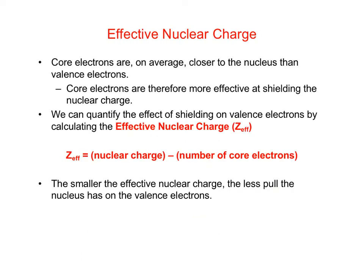Core electrons are on average closer to the nucleus than valence electrons — they spend most of their time closer to the nucleus than a valence electron. That means core electrons are more effective at shielding nuclear charge for the valence electrons. We can quantify that effect with a property called effective nuclear charge.